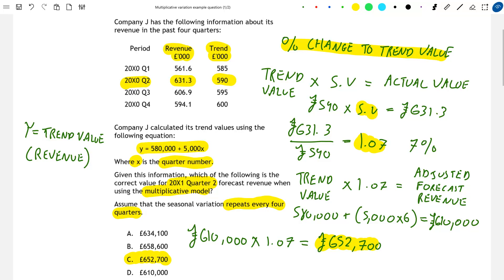Now if we take a look at our options, we can see that option D is just the trend value for this period. This option hasn't taken into account the seasonal variation that we expect to occur in this period. So option C is the one that we want.